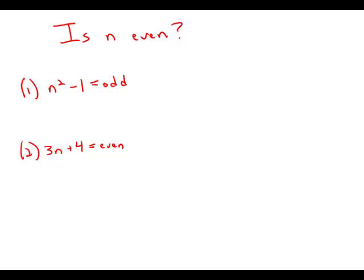If n is an integer, is n even? We have a straightforward problem here. Statement 1 tells us that n² - 1 is an odd integer. Well, if n² - 1 is odd, we add